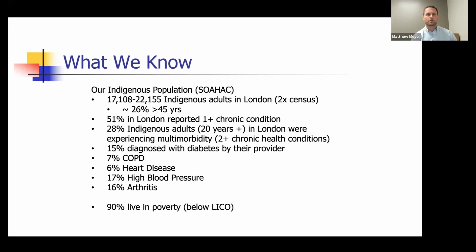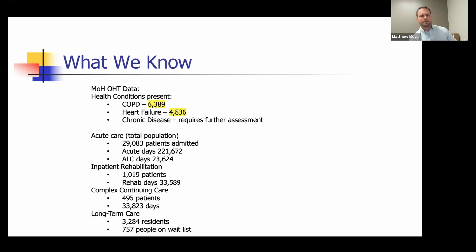We acknowledged early that we needed to supplement that information. One key gap was that we don't have fantastic data on our Indigenous populations. Fortunately, our regional AHAC had just completed a survey of local Indigenous communities, so we were able to draw on that and share it with our Coordinating Council. We also dove deeper into trends and opportunities — very early on we identified that COPD and heart failure were significant challenges, and we began working with partners to look at bed days, ALC data, and how the system was functioning across the continuum.